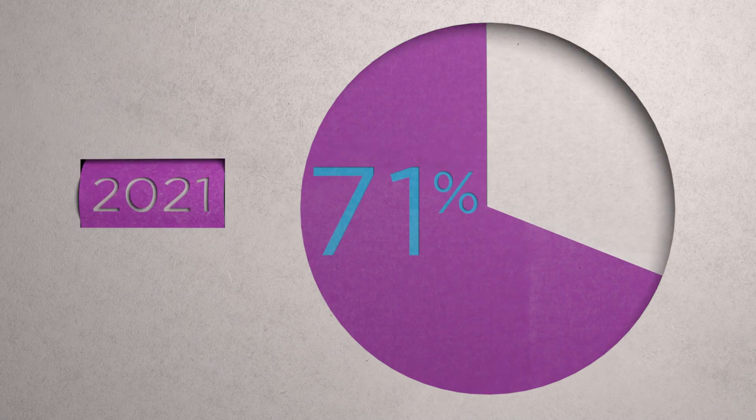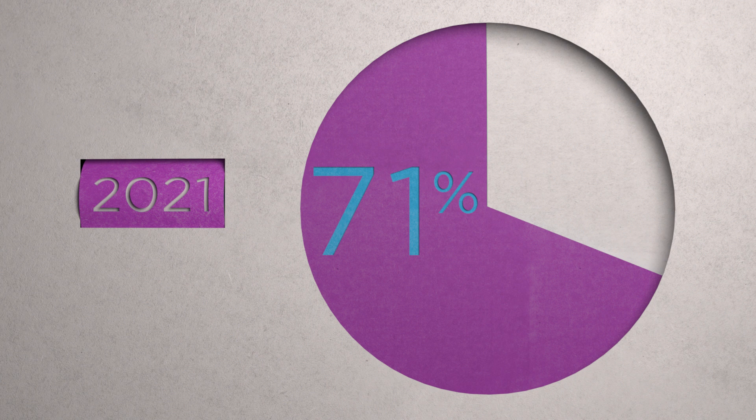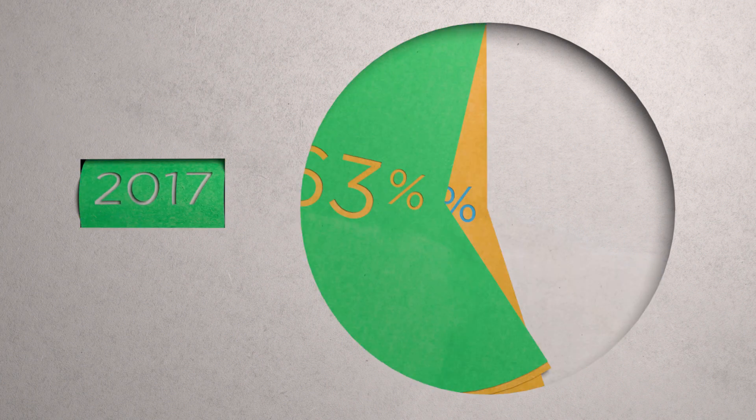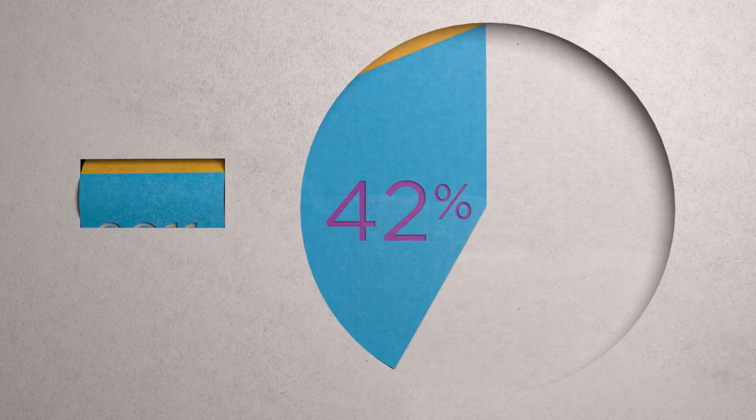As of 2021, 71% of adults in developing countries have an account with a financial institution or mobile money provider. This is an increase of more than 50% from a decade ago.